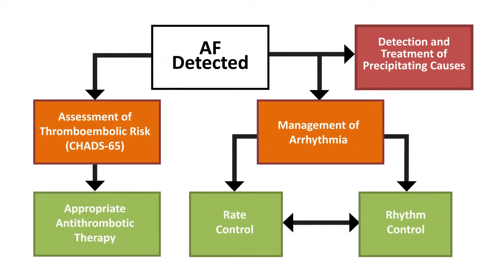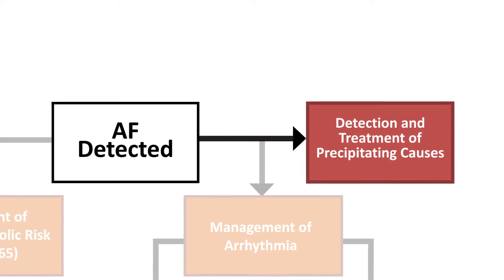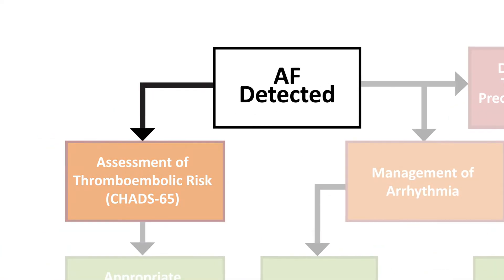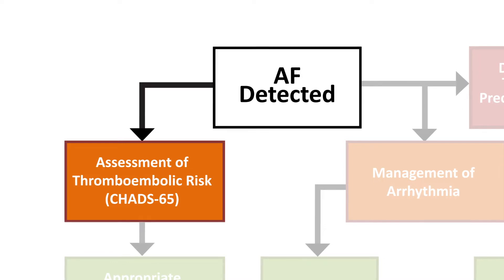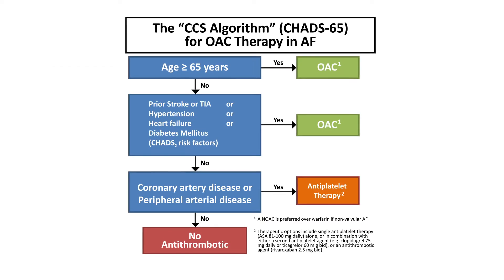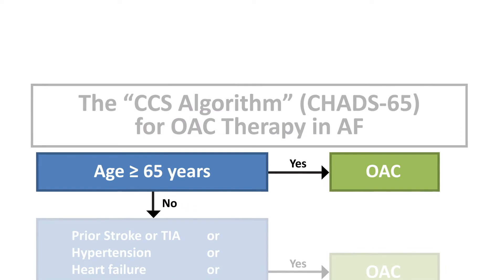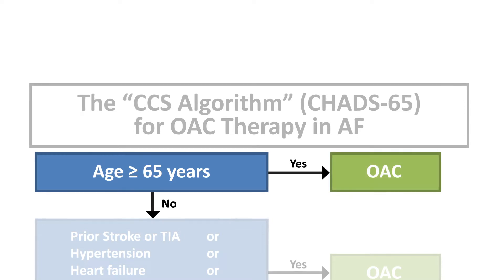This algorithm depicts the key steps in the management of AF. Once AF is detected, the first step is to identify and treat precipitating factors such as underlying structural heart disease and other predisposing factors. Next is the assessment of the patient's risk of stroke and systemic thromboembolism to determine whether antithrombotic therapy is needed. The CCS has a stroke risk stratification for patients with non-valvular atrial fibrillation, nicknamed the CHADS-65 algorithm. In the first step, patients aged 65 years or older should be started on oral anticoagulation therapy, usually a non-vitamin K oral anticoagulant, or NOAC.